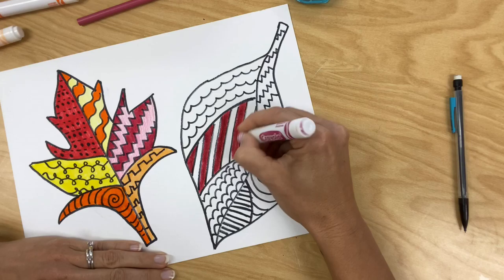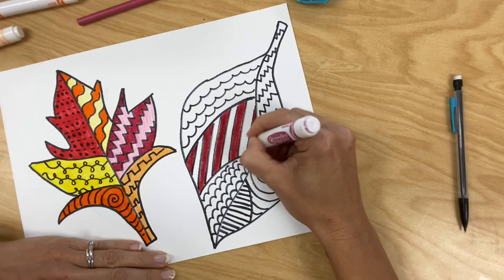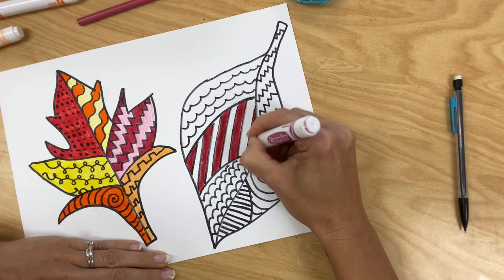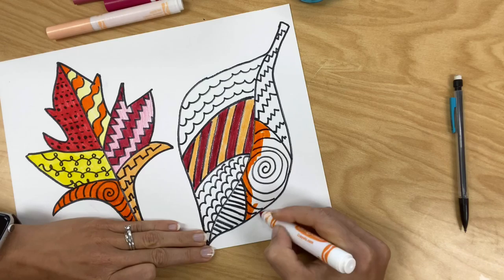Not only is neatness part of your grade, but this is your opportunity to show me that you know the difference between warm colors and cool colors. So make sure you're only using reds, oranges, yellows, and pinks to fill in the insides of your leaves.